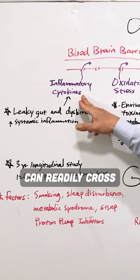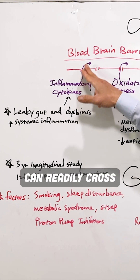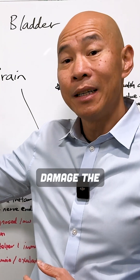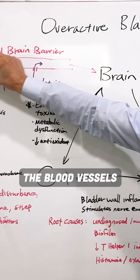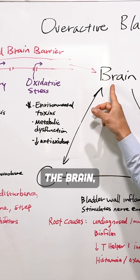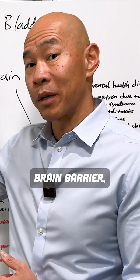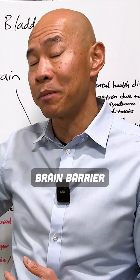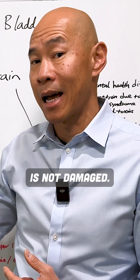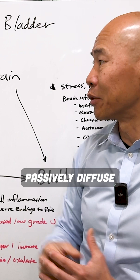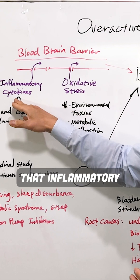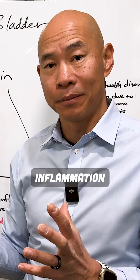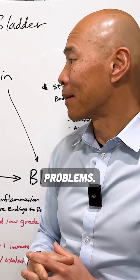These inflammatory cytokines can readily cross the blood-brain barrier. They can either damage the blood-brain barrier — the blood vessels that supply blood to the brain — or they can simply cross it even if it's not damaged, by passively diffusing through it. When that inflammatory cytokine gets into the brain, it causes brain inflammation, which can lead to downstream problems.